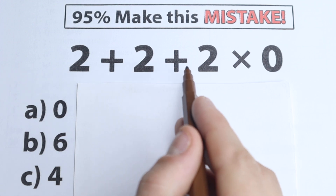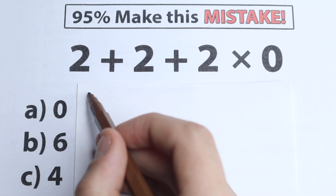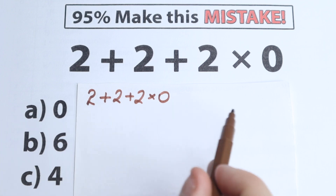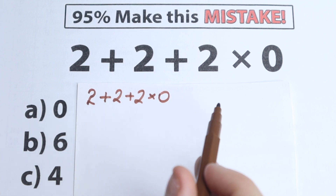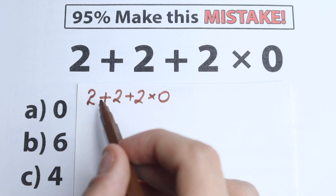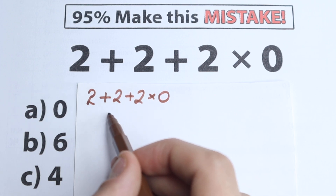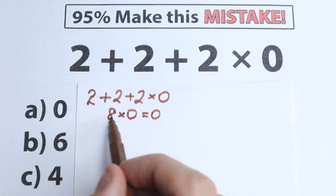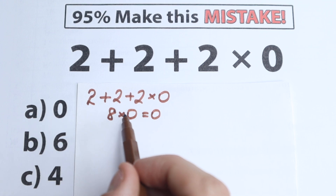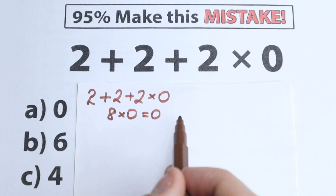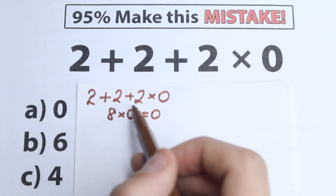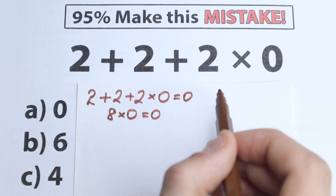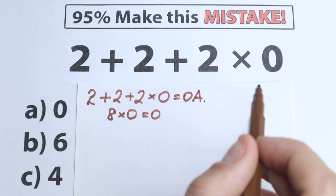Here's our question: 2 plus 2 plus 2 times 0 — very simple on the first side. A lot of students solve it like this, because they know that any number multiplied by 0 equals 0. For example, 8 times 0 equals 0, or 1000 times 0, the answer is 0. So they say, okay, we have 6 on the left-hand side, 6 times 0 equals 0, and they say option A is the correct answer.